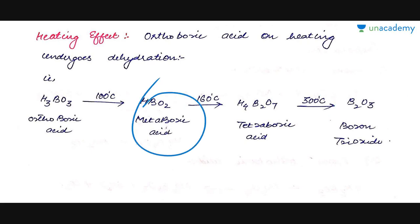Therefore, on heating boric acid at different temperatures we can get different compounds such as metaboric acid, tetraboric acid, or boron trioxide starting from our initial compound, boric acid.